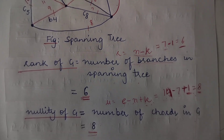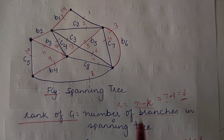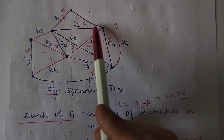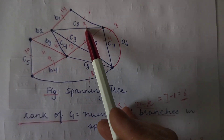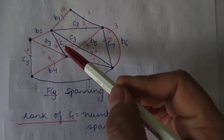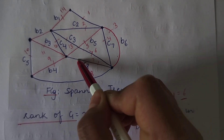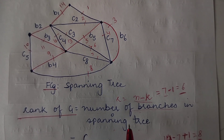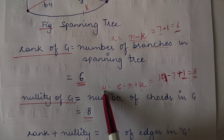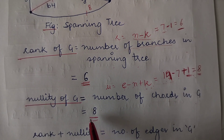The other way is to count the number of cords — those edges not in the spanning tree. Since the red edges are in the spanning tree, I count all the blue edges. Counting the blue edges: 1, 2, 3, 4, 5, 6, 7, 8. So the total number of cords is 8, meaning the nullity of the graph is 8. Either using the formula or counting cords, the nullity is always the same — 8.